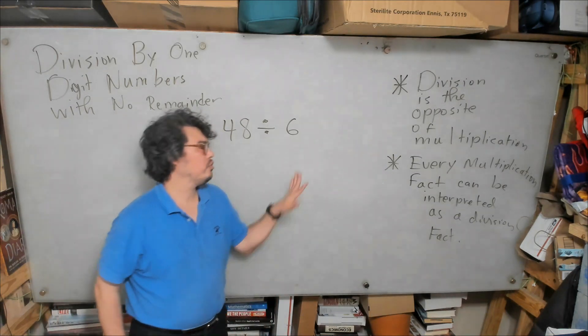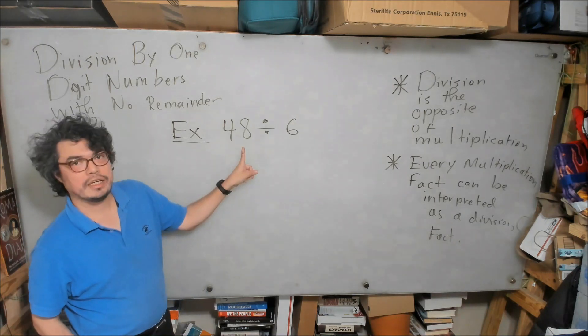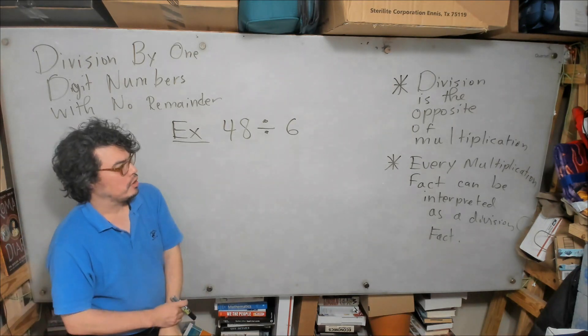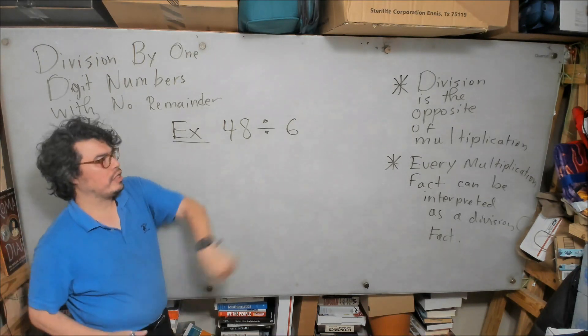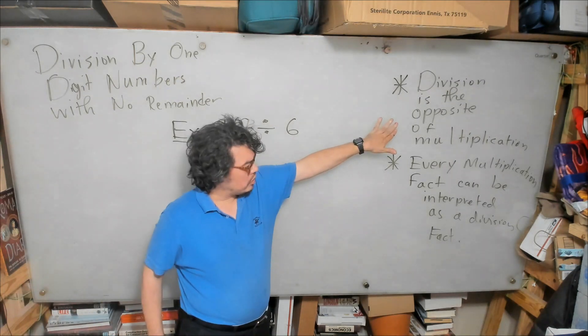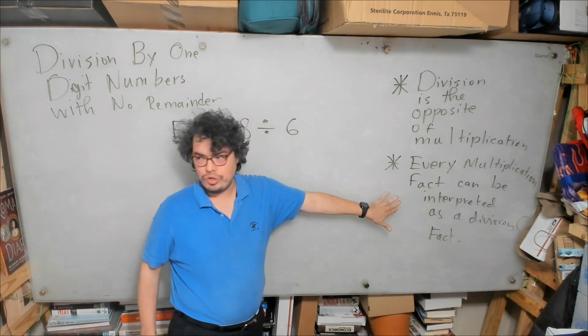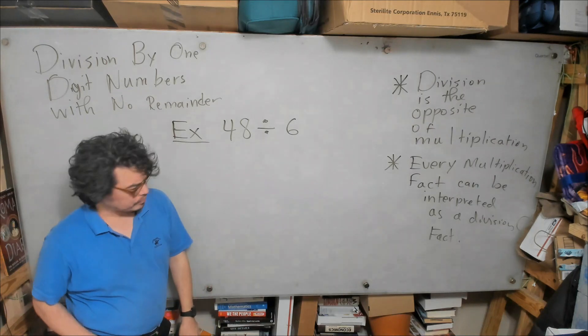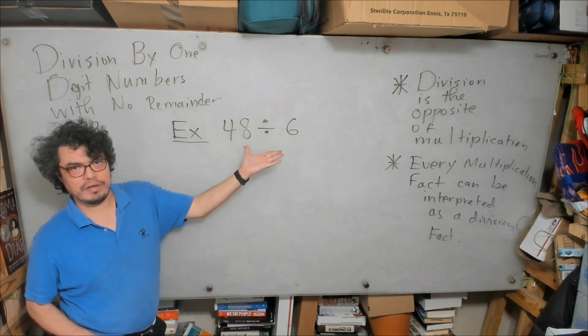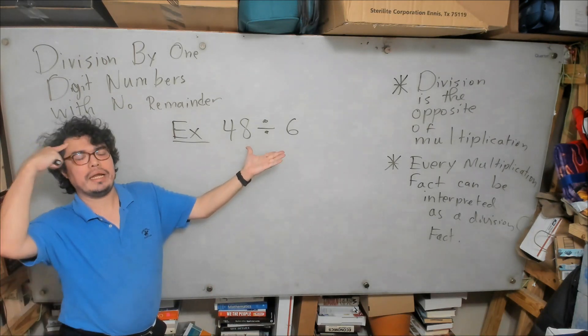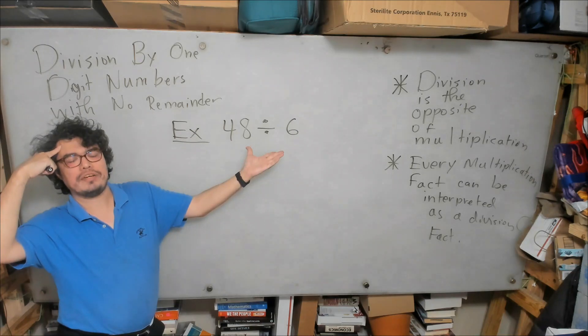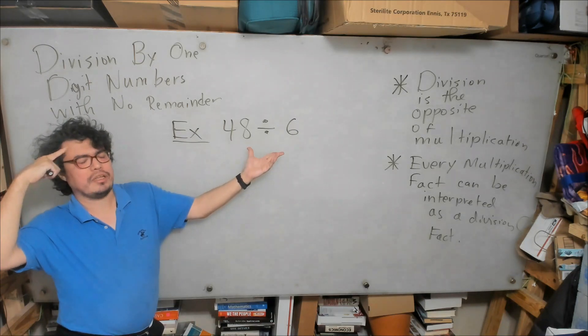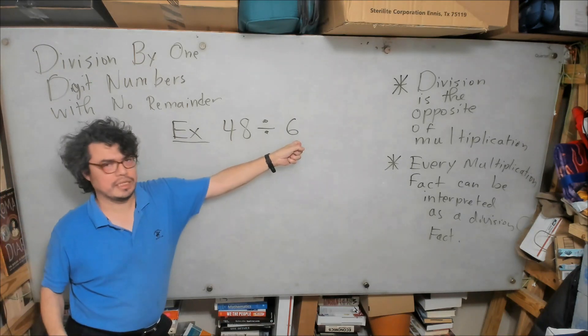Hello ladies and gentlemen, so now let's do this example here. What is 48 divided by 6? Remember what we just learned: division is the opposite of multiplication and every multiplication fact can be interpreted as a division fact. So if I'm thinking of division as the opposite of multiplication, I want to ask myself what could possibly multiply times 6 to give me 48?